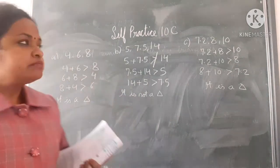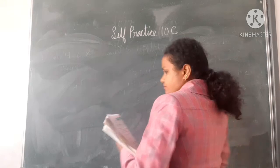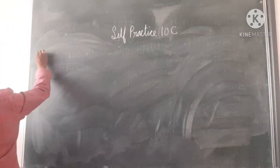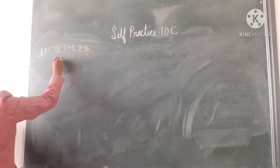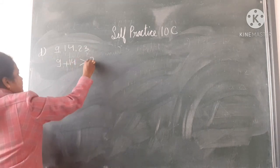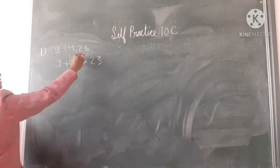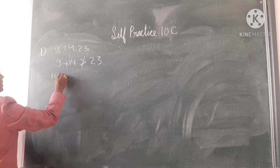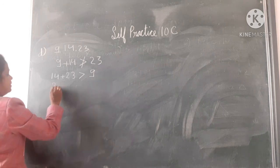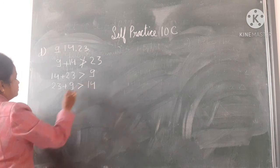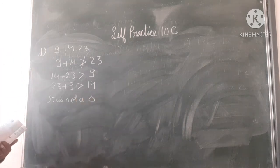Now see the D part: 9, 14, 23. 9 plus 14, is it greater than 23? No. 14 plus 23 is greater than 9, and 23 plus 9 is greater than 14. So it is not a triangle because at one place it is not following.